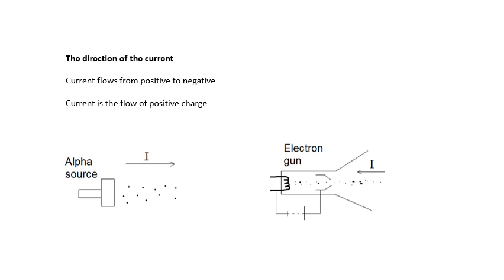The direction of current: current flows from positive to negative, and current is defined as the flow of positive charge. For example, if a radioactive source emits alpha particles going left to right, the current goes left to right. But if an electron gun fires electrons left to right, the current goes right to left, because electrons are negative. Don't worry too much about this in first year — it becomes important in second year.